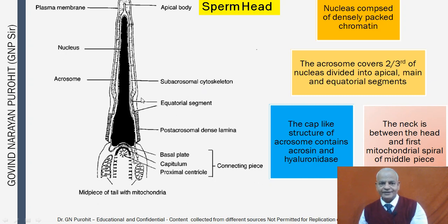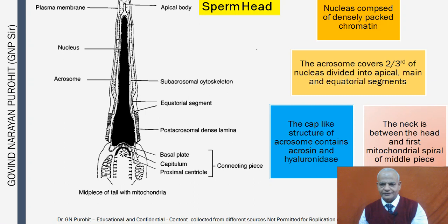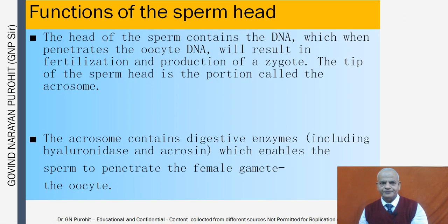The sperm head also has a subacrosomal cytoskeleton, equatorial segments, post-acrosomal dense lamina, basal plate, capitulum, and proximal centriole, from which the midpiece begins with the mitochondria. The acrosome covers two-thirds of the nucleus and is divided into apical, main, and equatorial segments. The acrosome contains acrosin and hyaluronidase, which help burrow through the cumulus cells of the oocyte during fertilization. The neck lies between the head and the first mitochondrial spiral of the midpiece.